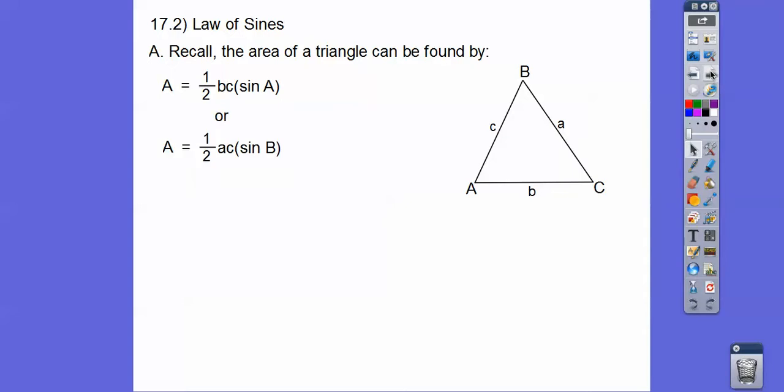If we chose angle B, then it's one-half the sides that are touching, times the sine of those angles. Angle C, one-half AB times the sine of C. You remember that? Well, the area of a triangle equals the area of a triangle no matter what formula you use, so that must mean that all of those equations or expressions are equal to each other.